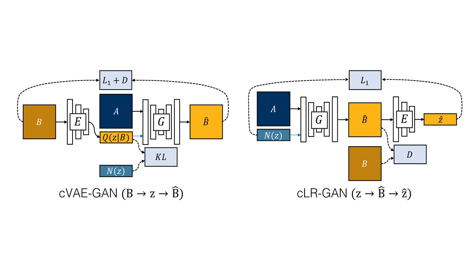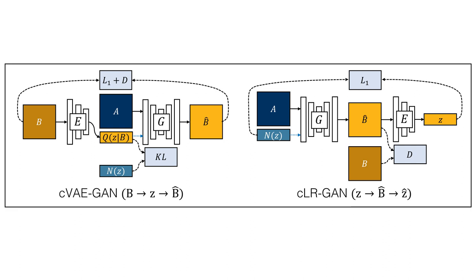We note that on a meta-level, both of these approaches encourage a bijection between output B and latent Z, cycling between the two spaces. As such, we are inspired to blend the two together. We call this model BicycleGAN.